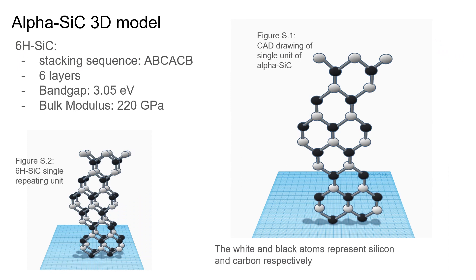The following pictures illustrate alpha silicon carbide specifically — the 6H polytype. This polytype has a stacking sequence A-B-C-A-C-B, and the white and black atoms represent silicon and carbon respectively.